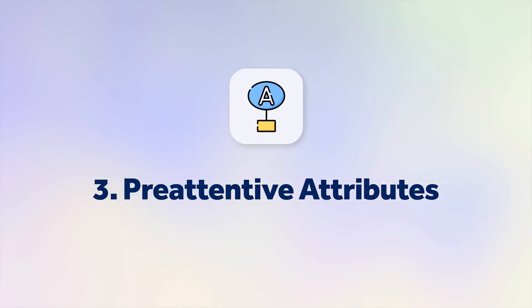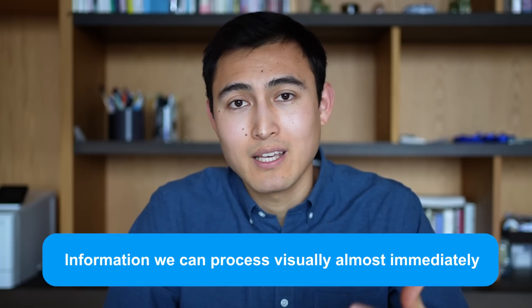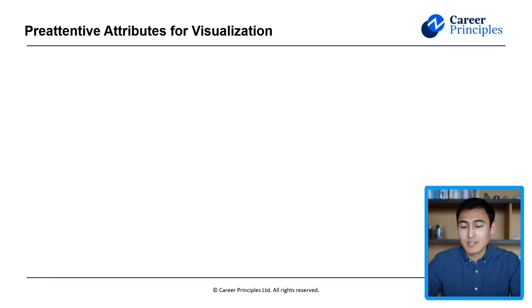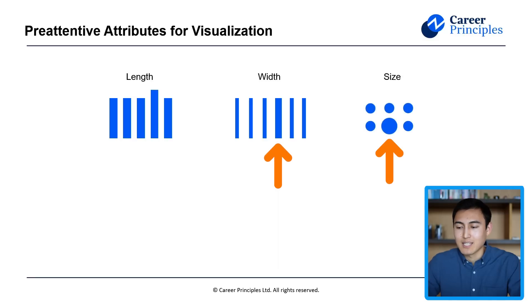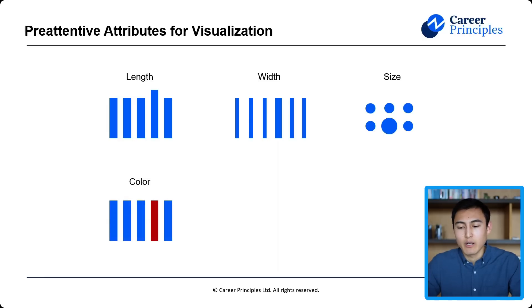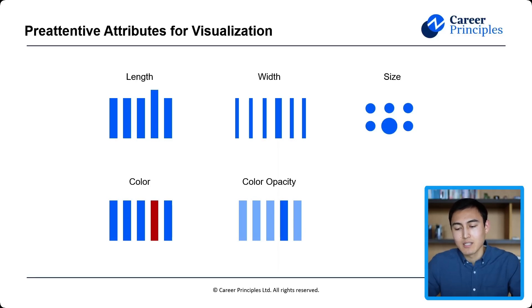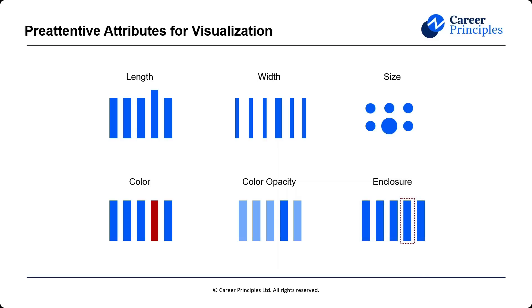Next up, we have a concept called pre-attentive attributes — maybe you haven't heard of it, but you've definitely seen it. This is information we process visually in an immediate, almost subconscious manner. Examples include the length or area of a bar, the width or size of bubbles, the color, color opacity — making one color slightly darker so it stands out — and finally an enclosure, like a dashed red rectangle around a certain column to make it stand out.